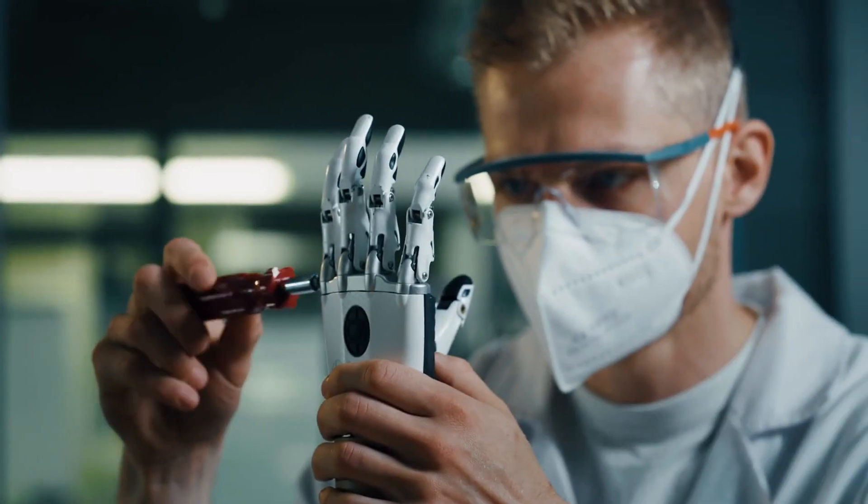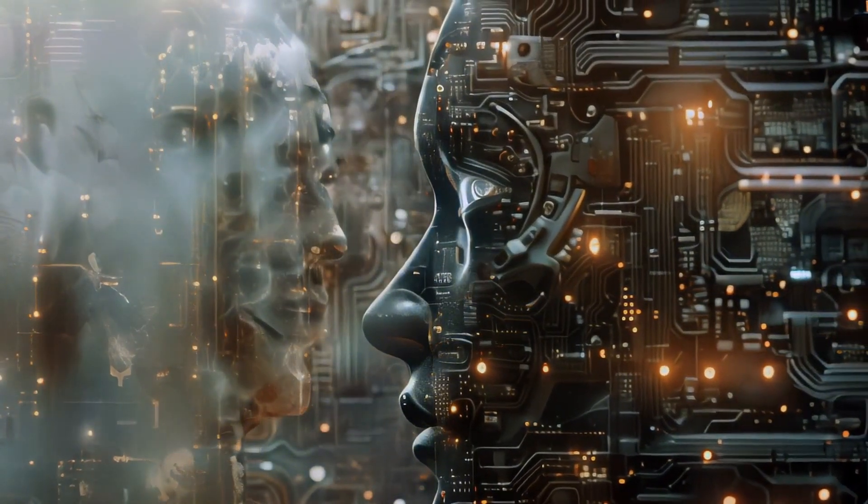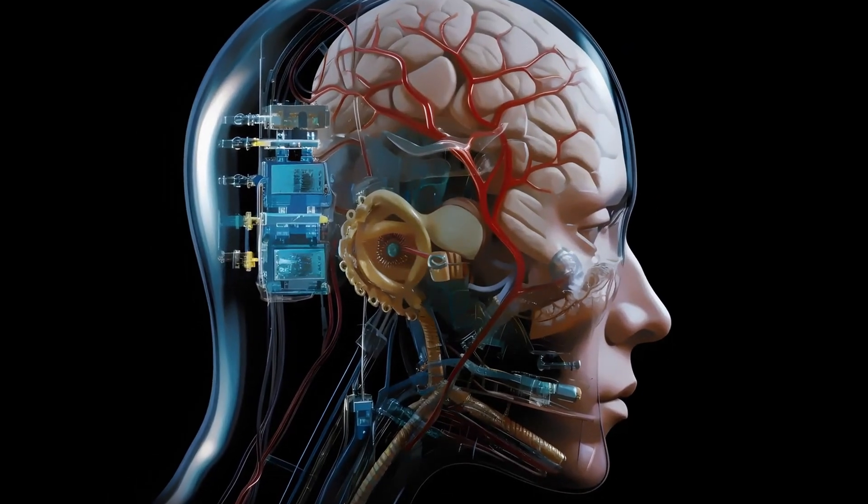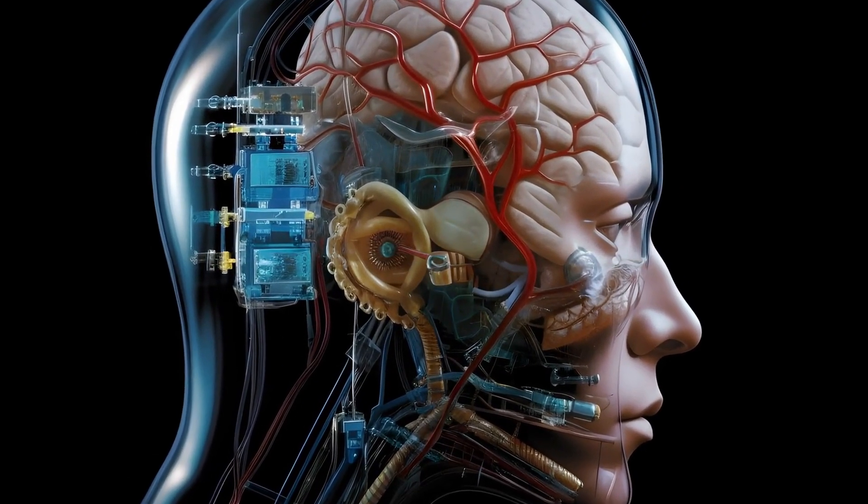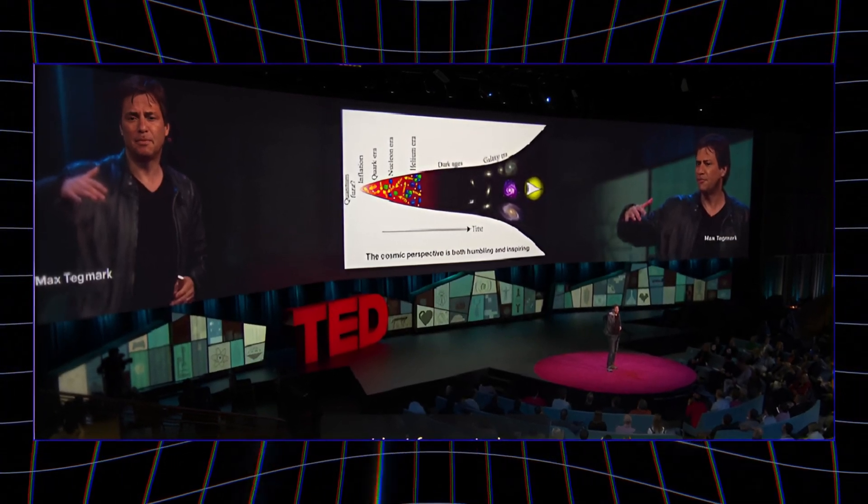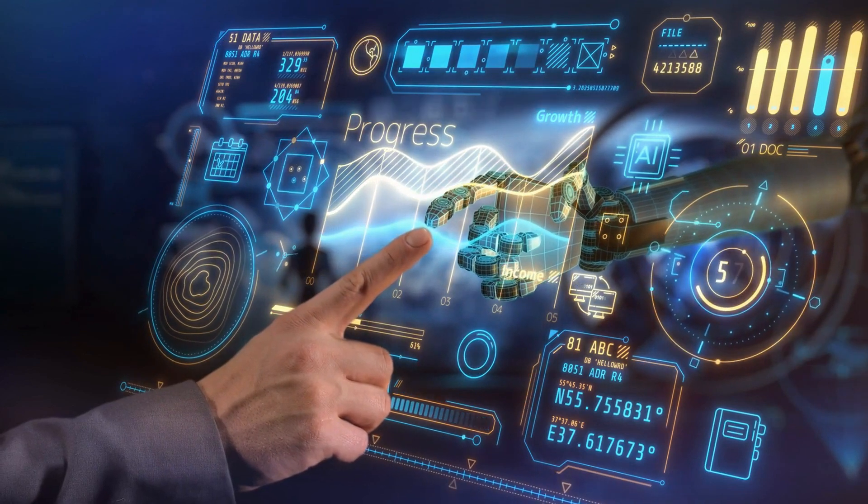OpenAI's chief scientist, a very respected computer scientist with 300,000 citations, thinks AI might be slightly conscious. He's shown how AI's brain cells are similar to ours. Max Tegmark, another expert, says consciousness is how it feels to process complex information. Some theories suggest consciousness grows with complexity.